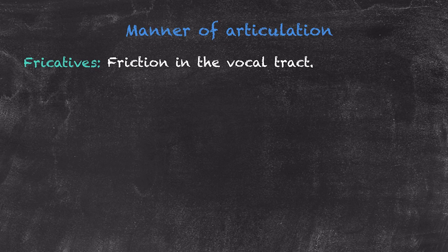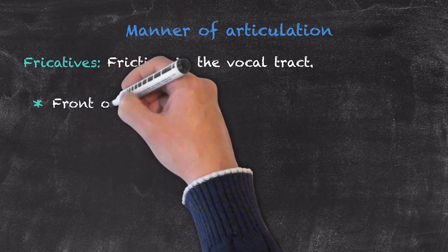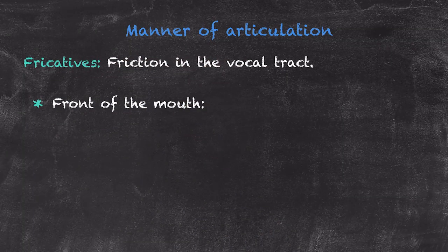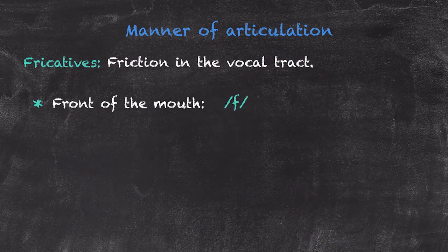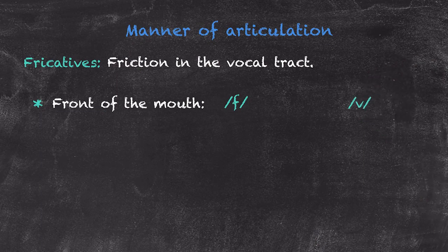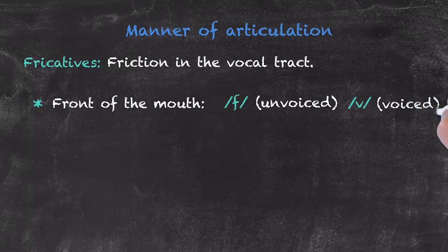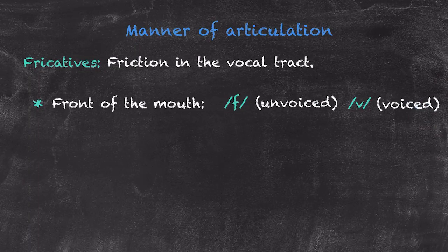We have nine of these sounds and they move from the front to the back of the vocal tract. In the front of the mouth, we have two sounds which involve our lips. The only difference between those two sounds is that one is voiced and the other is not. Regardless, we do involve our lips and they are the furthest front of the vocal tract with our fricatives.